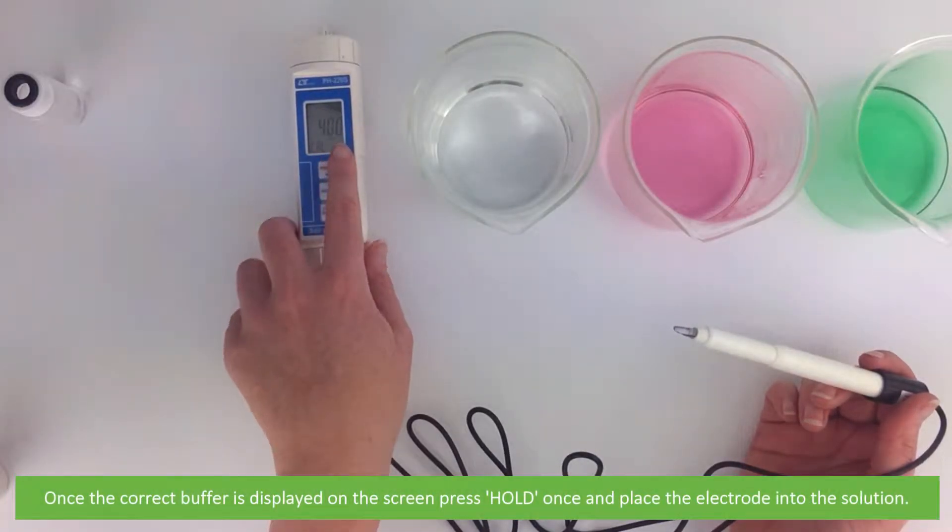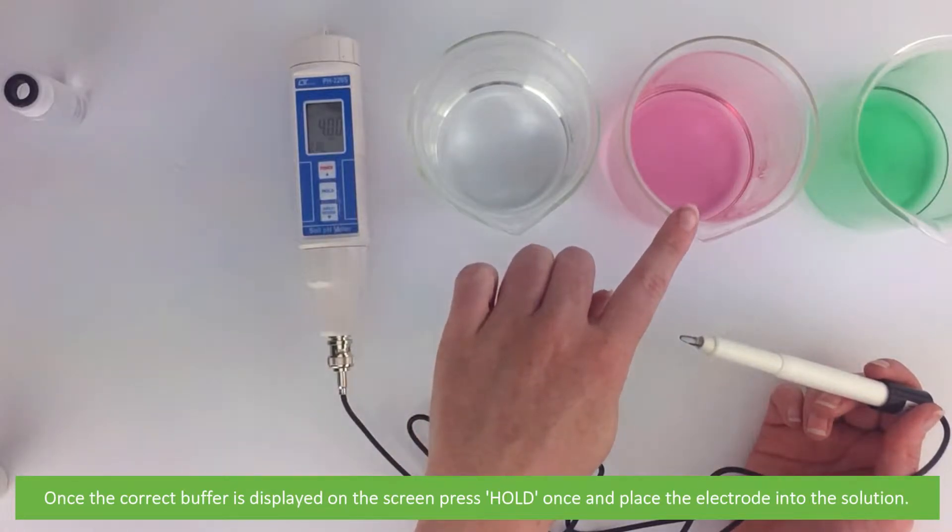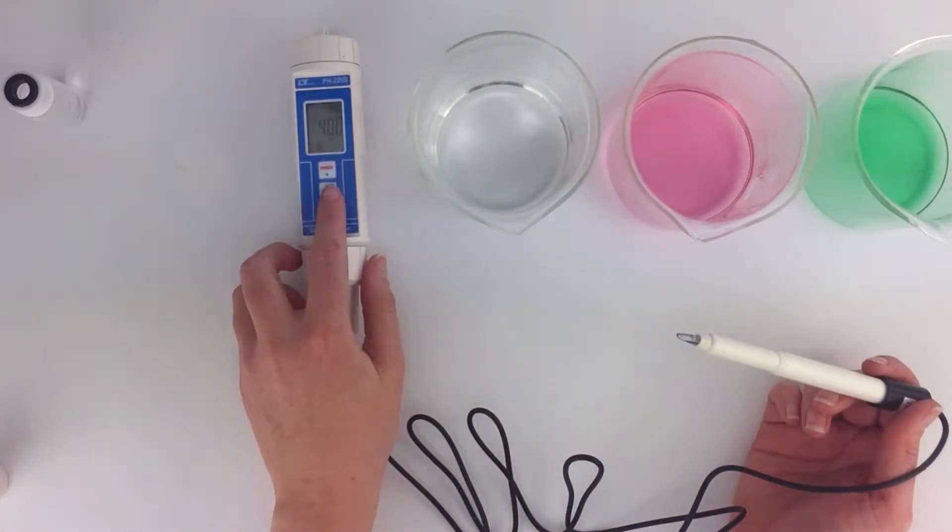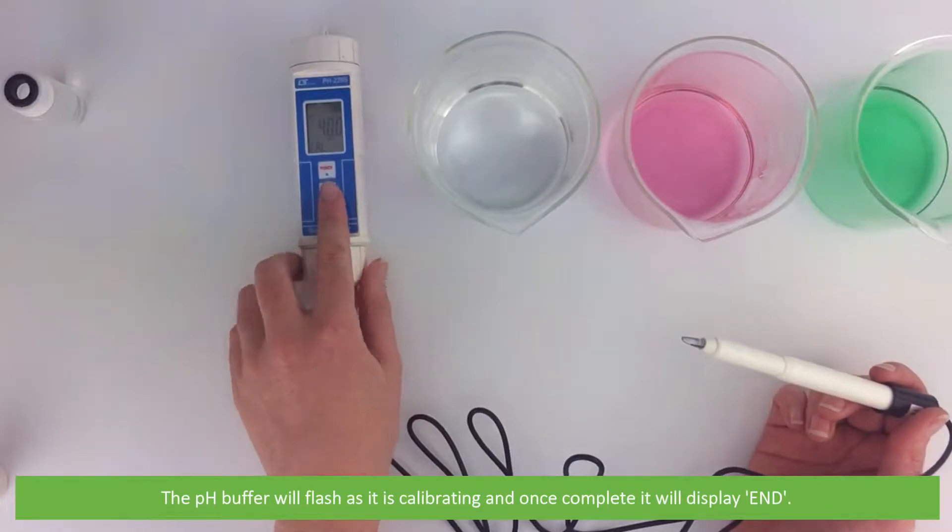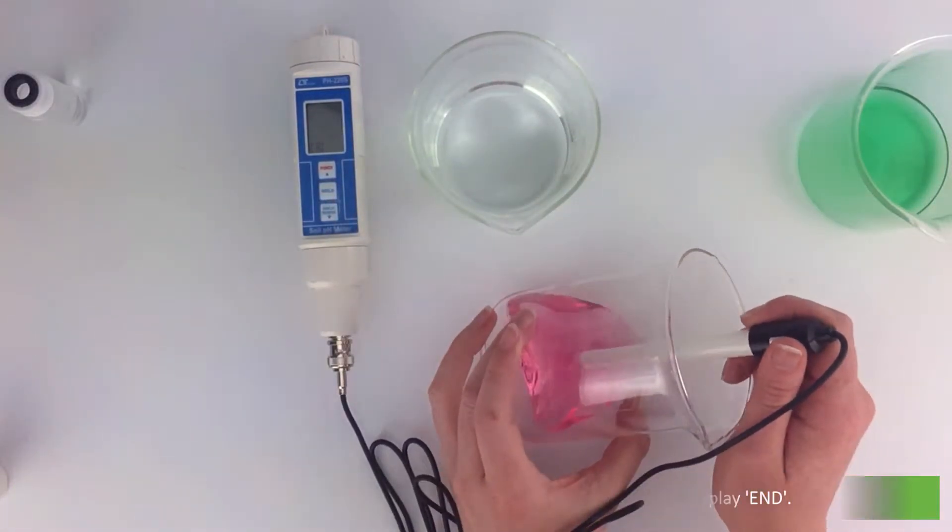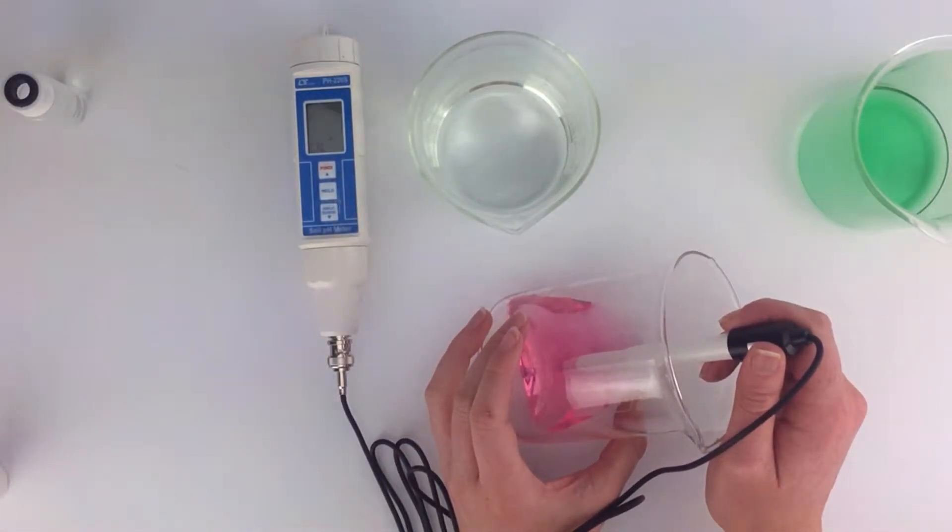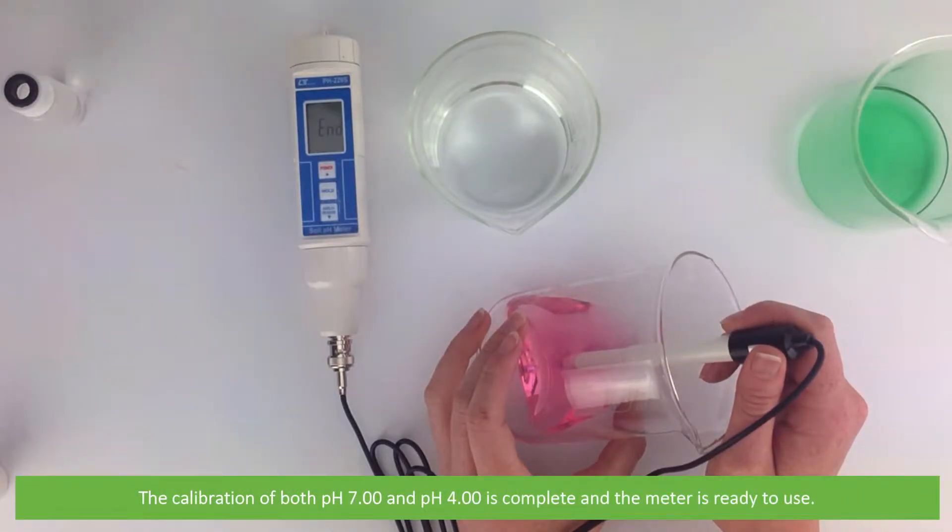Once the correct buffer is displayed on the screen, press hold, then place the electrode into the solution. The pH buffer will flash as it is calibrating, and once complete it will display END. The calibration of both pH 7 and pH 4 is now complete and the meter is ready to use.